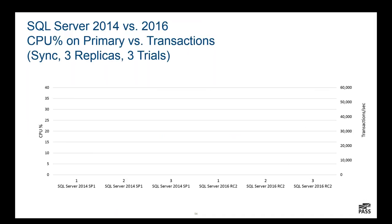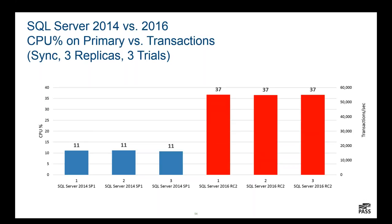One more performance experiment demonstrating consistency across three tests each for 2014 versus 2016. CPU utilization was 11% in 2014 versus 37% in SQL Server 2016 — over three times higher. Transactions — the work done — was about twice as high. So for a little more CPU, you get a lot more business transactions done. Simply upgrading to the latest version of SQL Server gives you all this extra performance, assuming your storage subsystem can support such throughput.